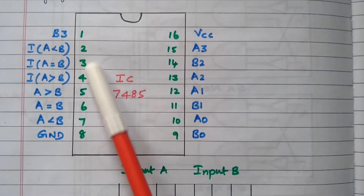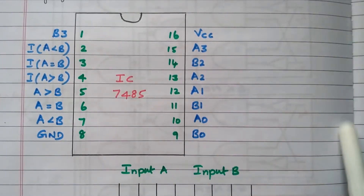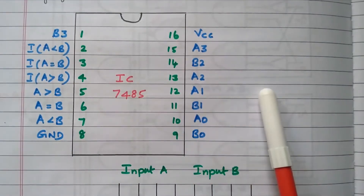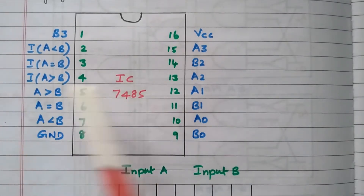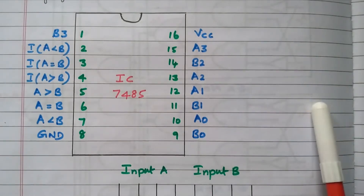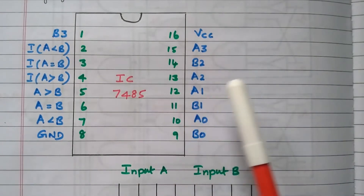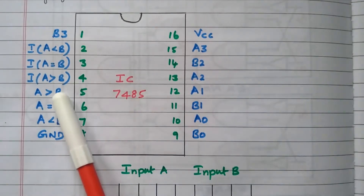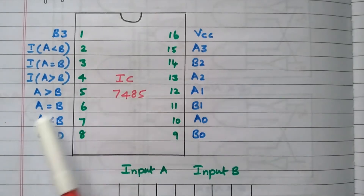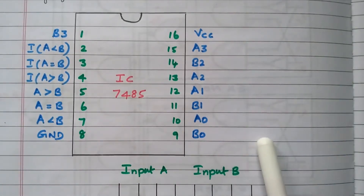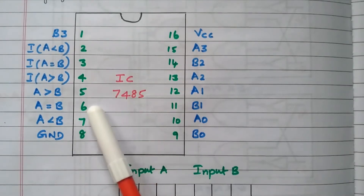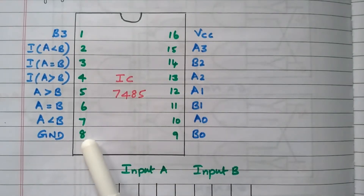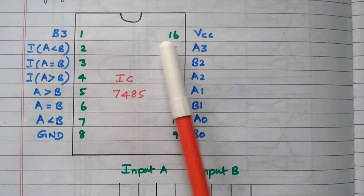When using two ICs, the three output terminals of the first IC are connected to the three cascade input terminals of the second IC — that is, the output of the first IC is connected as the input of the second IC. Pin number 8 is ground, pins 2, 3, 4 are the cascade inputs, pins 5, 6, 7 are the outputs, and pin 16 is VCC.